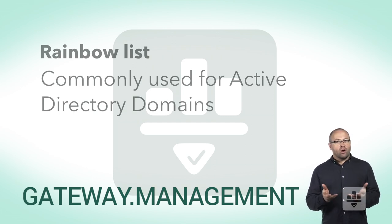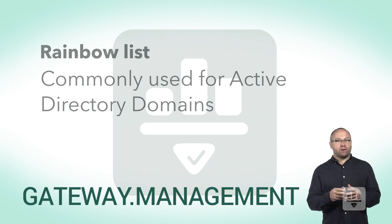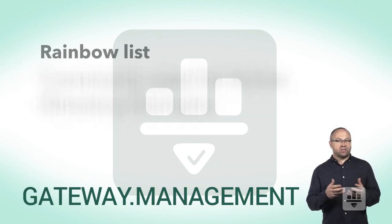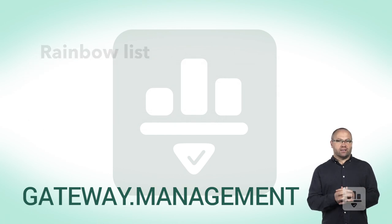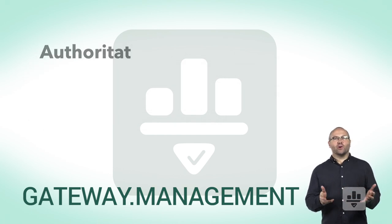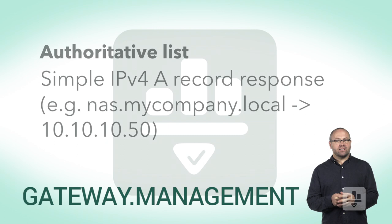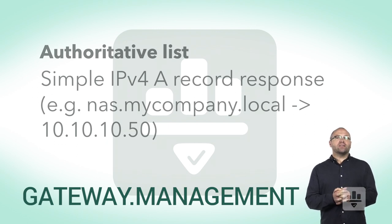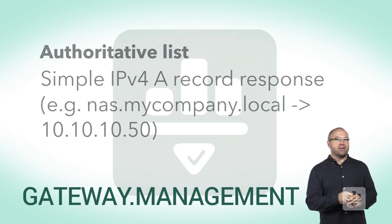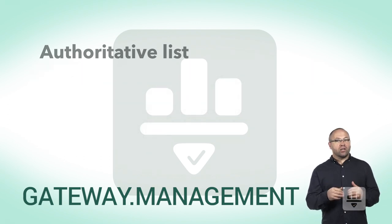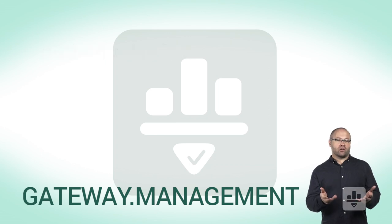Rainbow lists are also used when a single or few exceptions need to be made from a managed blacklist, such as a third-party ad networks list. The authoritative list responds with simple IPv4 A records to easily facilitate authoritative DNS, as well as what we call split DNS zones. This is where you have a public DNS record resolving to your public IP, but on your internal network you wish to have it resolved internally.